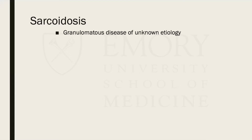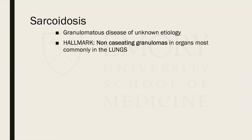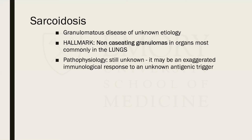We know that sarcoidosis is a granulomatous disease of unknown etiology. The hallmark of the disease is the formation of non-necrotizing, non-caseating granulomas. It involves organs — most commonly the lungs, but it can also involve the heart, liver, lymph nodes, spleen, and eyes, among others. The pathophysiology appears to be an exaggerated immunologic response to an unknown antigenic trigger, predisposing certain patients to formation of these non-caseating granulomas.